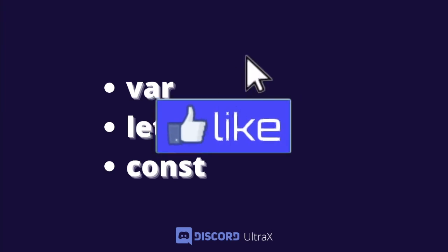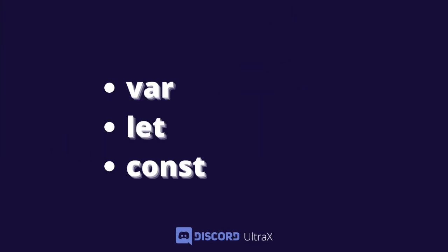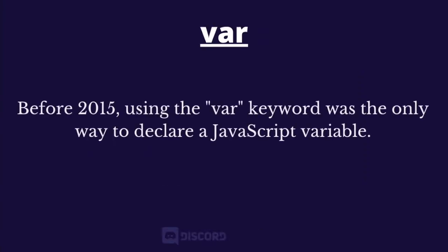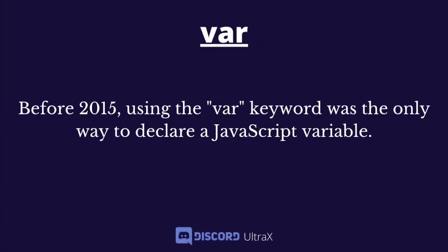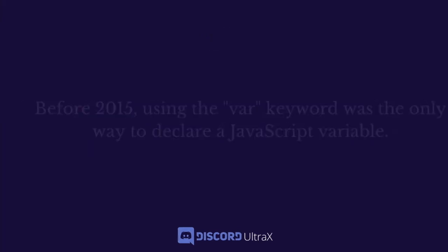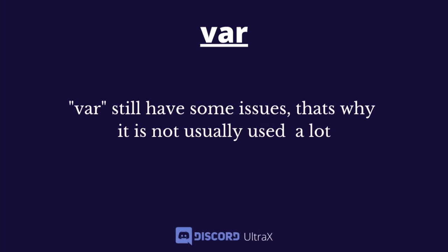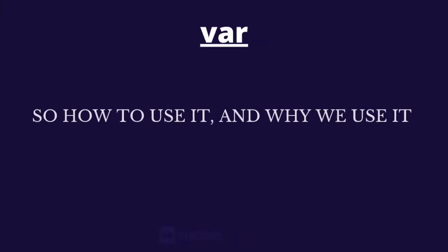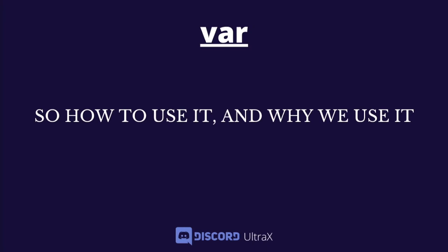We have three variables: var, let, and const — those are JavaScript variables. Before 2015, using the var keyword was the only way to declare a JavaScript variable. Var still has some issues, which is why it's not usually used a lot. The link for this presentation will be in the video description.